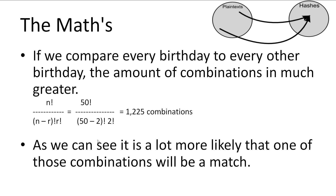Taking any one birthday, there are 49 possible matches to be made. But if we compare every birthday to every other birthday, the probability greatly increases. Thankfully, there is an equation called the combination without replacement equation: n factorial over (n minus r) factorial times r factorial. In this case, r is 2, as we're looking for 2 birthdays, and n is 50 for the number of people. Working this out, it comes to 1225 combinations.